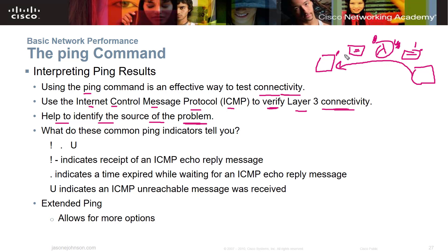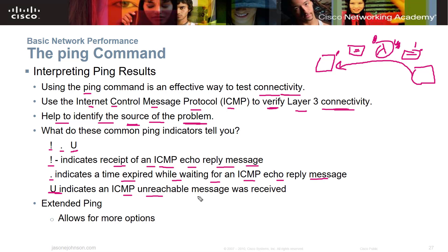That's a way to test and find the source of the problem. The common ping indicators are: an exclamation mark, a period, or a capital U. The exclamation indicates receipt of an ICMP echo reply message. A period indicates time expired while waiting for the ICMP echo reply. And a capital U indicates the ICMP unreachable destination message was received.